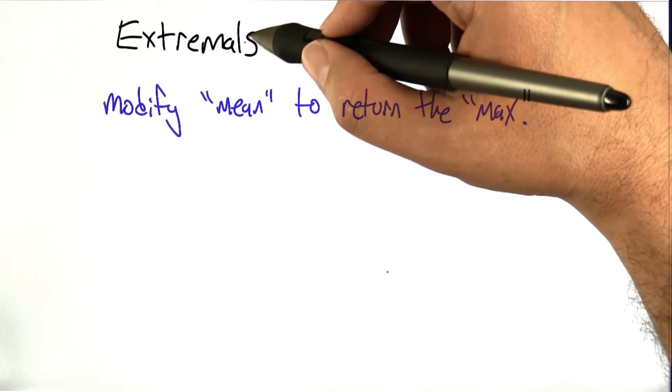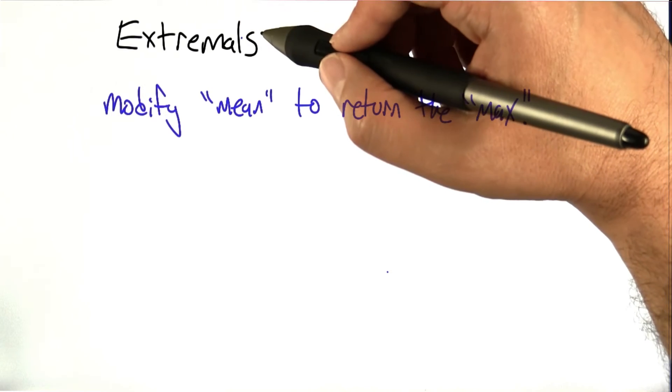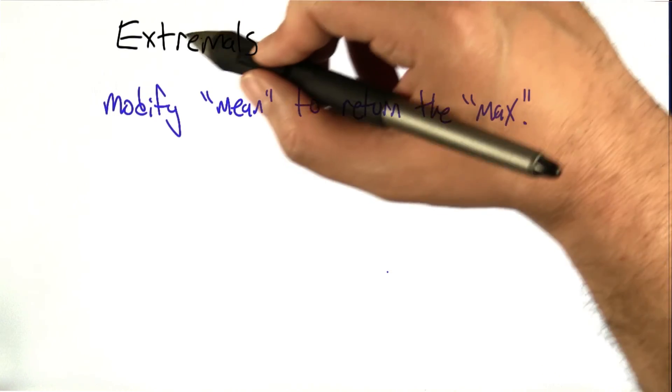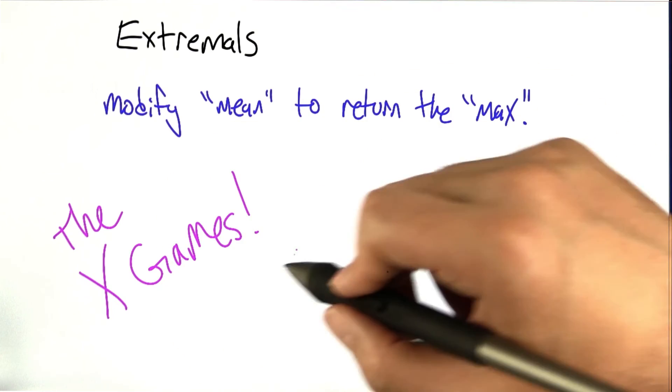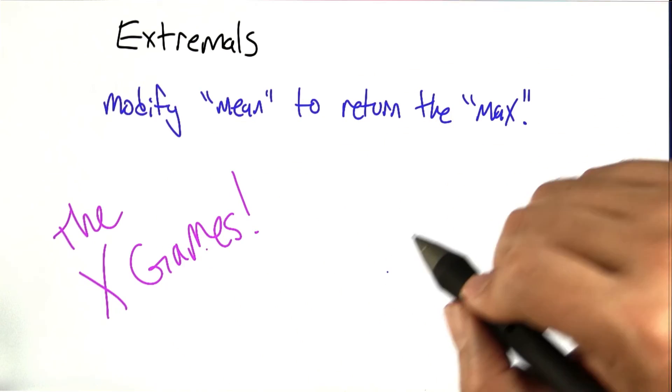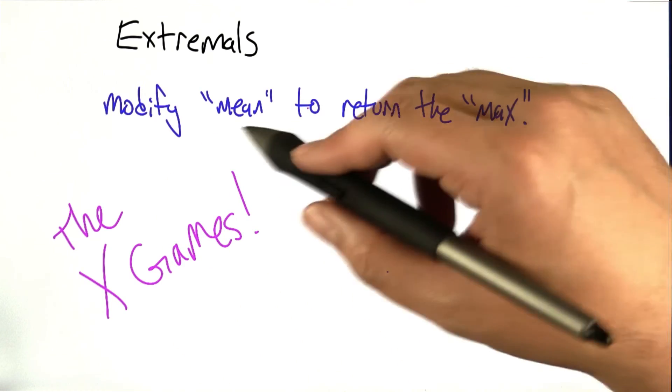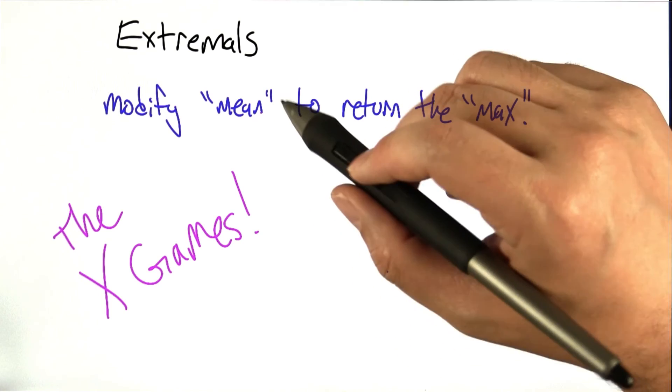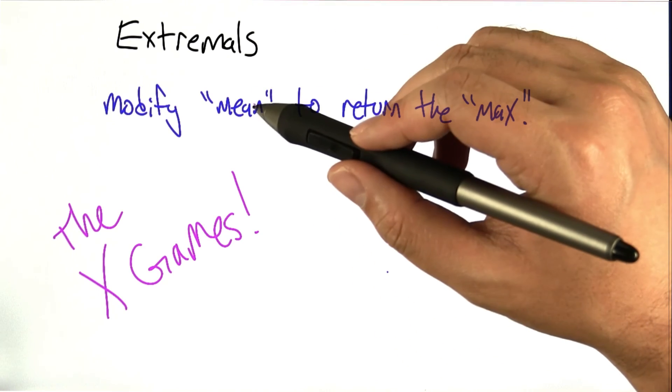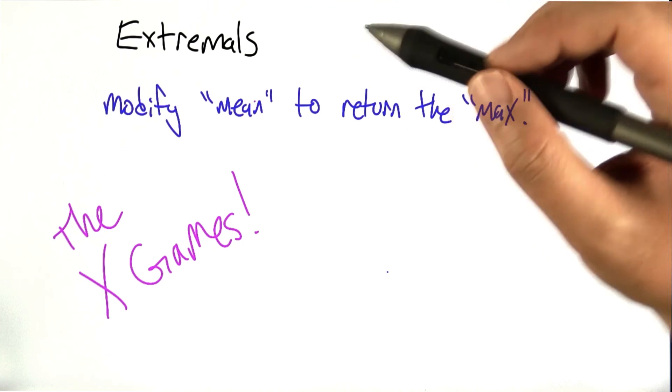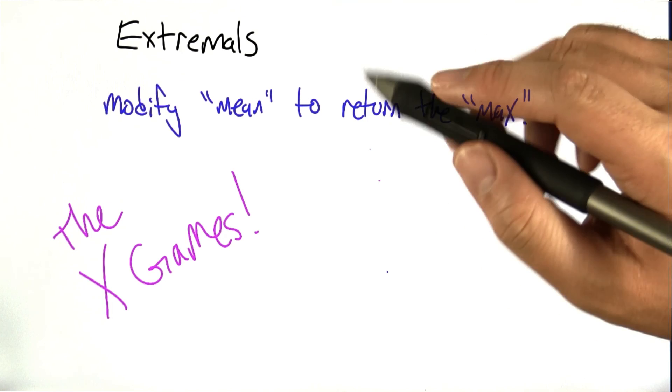The extremals of a list are the extreme values, the max and the min. It's just kind of a cooler way to say it. Woohoo! The extremals! The x games! But it's actually an awful lot like min. So what I'd like you to do is actually modify the mean algorithm that we had to actually compute the max of a list.